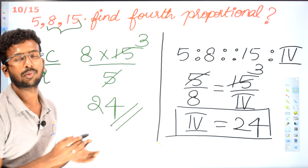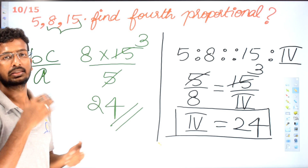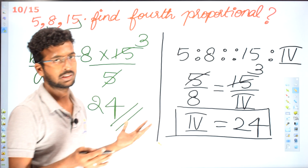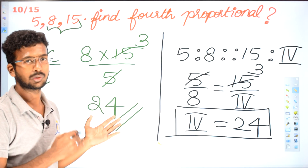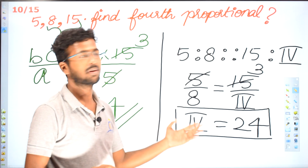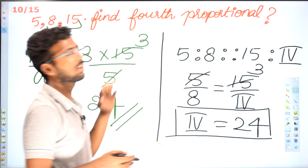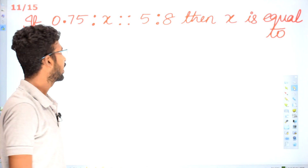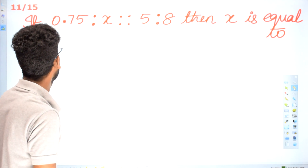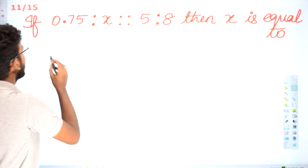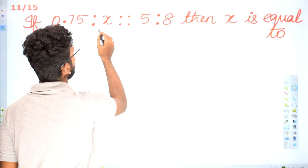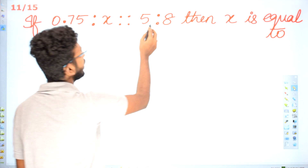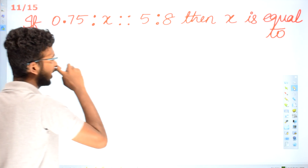So to summarize: first proportion, mid proportion (second proportion), third proportion, fourth proportion. Next question: if 0.75 ratio X proportion 5 ratio 8, then X equals what? That is: 0.75 divided by X is equal to 5 divided by 8.